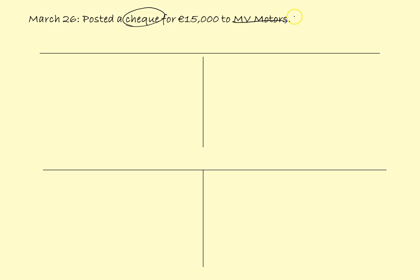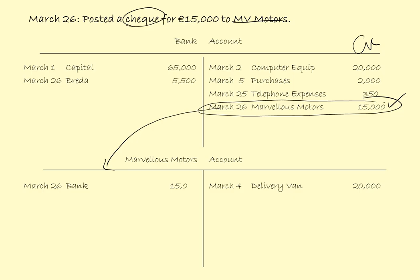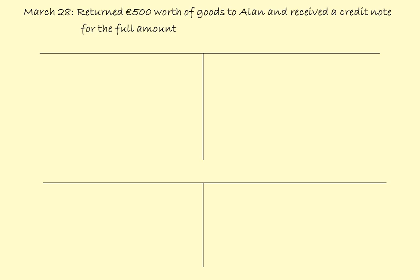Next: post a cheque for 15,000 to Marvelous Motors. Cheque implies bank and Marvelous Motors. We have the bank account with quite a few transactions on it now. Money coming out of the bank is credited, so we will credit the bank and debit the Marvelous Motors account: 15,000.